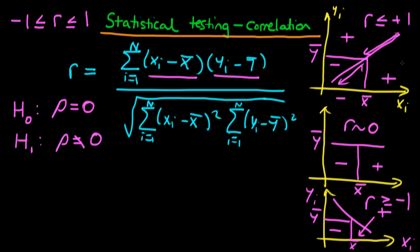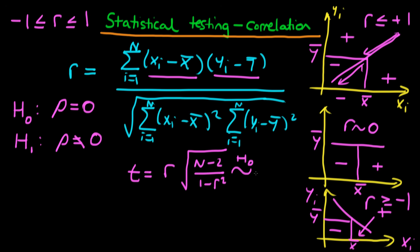We're testing that against the alternative hypothesis that rho does not equal 0. To statistically test this, it turns out we can construct a t-statistic, which is given by r times the square root of n minus 2 over 1 minus r squared. In the circumstance where the null hypothesis is true, this statistic is distributed with a t-distribution with n minus 2 degrees of freedom.